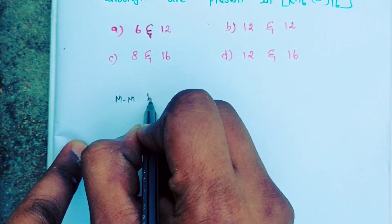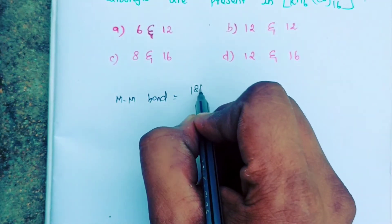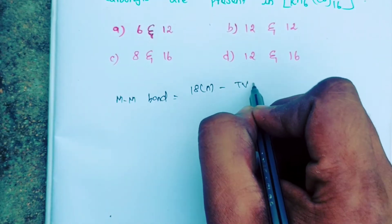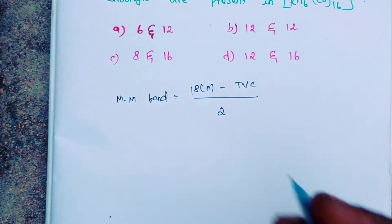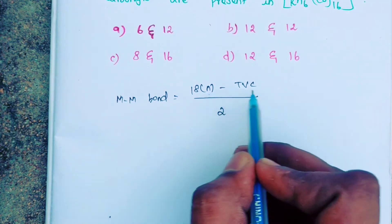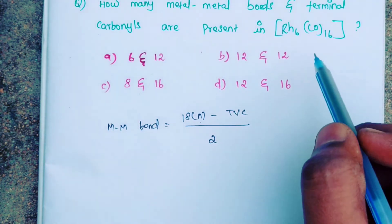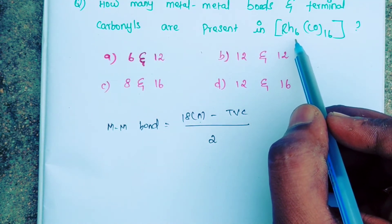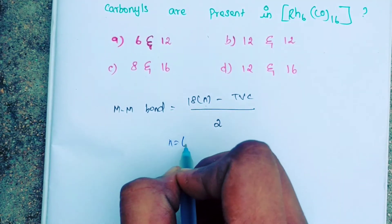The formula is: 18N minus total valence electron count divided by 2, where N is the number of metals present in the cluster. In the given cluster, there are six rhodium metals present, so N equals 6.